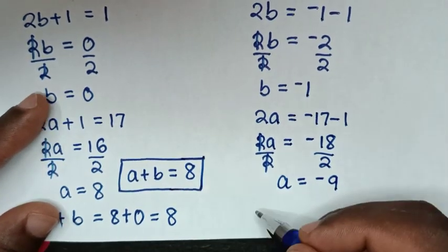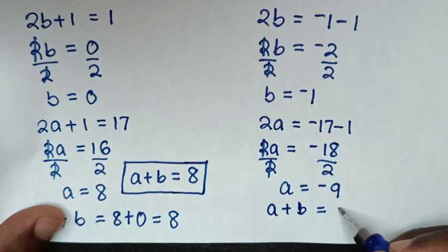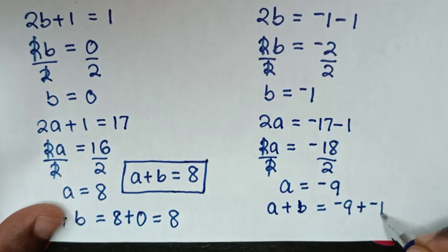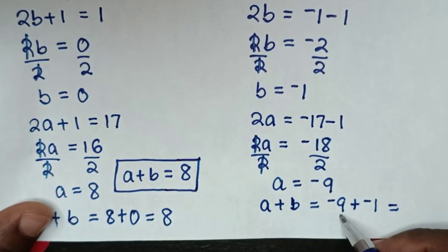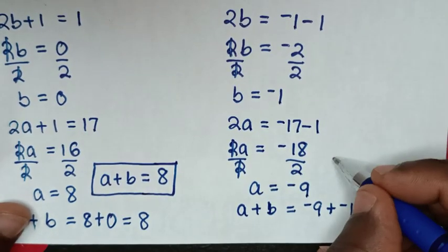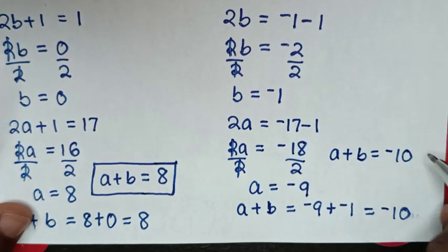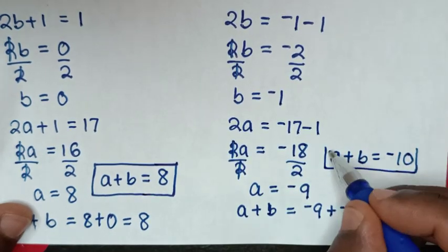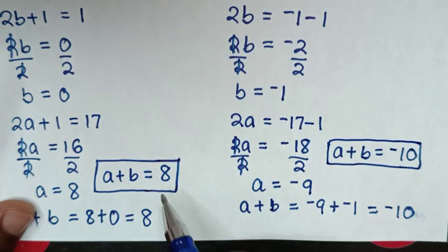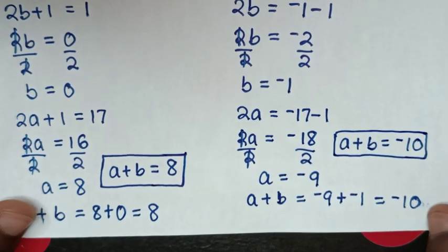Then to find the value of a + b, it will be equal to a = −9 plus b = −1, so it will equal −9 + (−1) = −10. Therefore the value of a + b is equal to −10. This is the second solution. So the values of a + b are 8 and −10. These are our final answers.